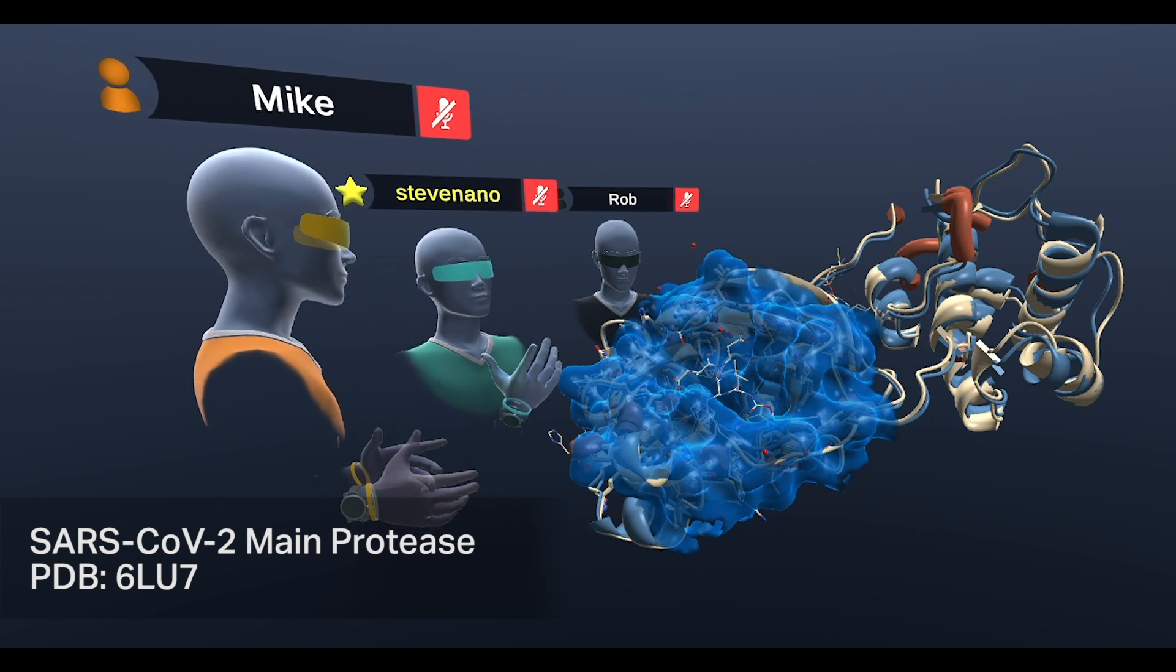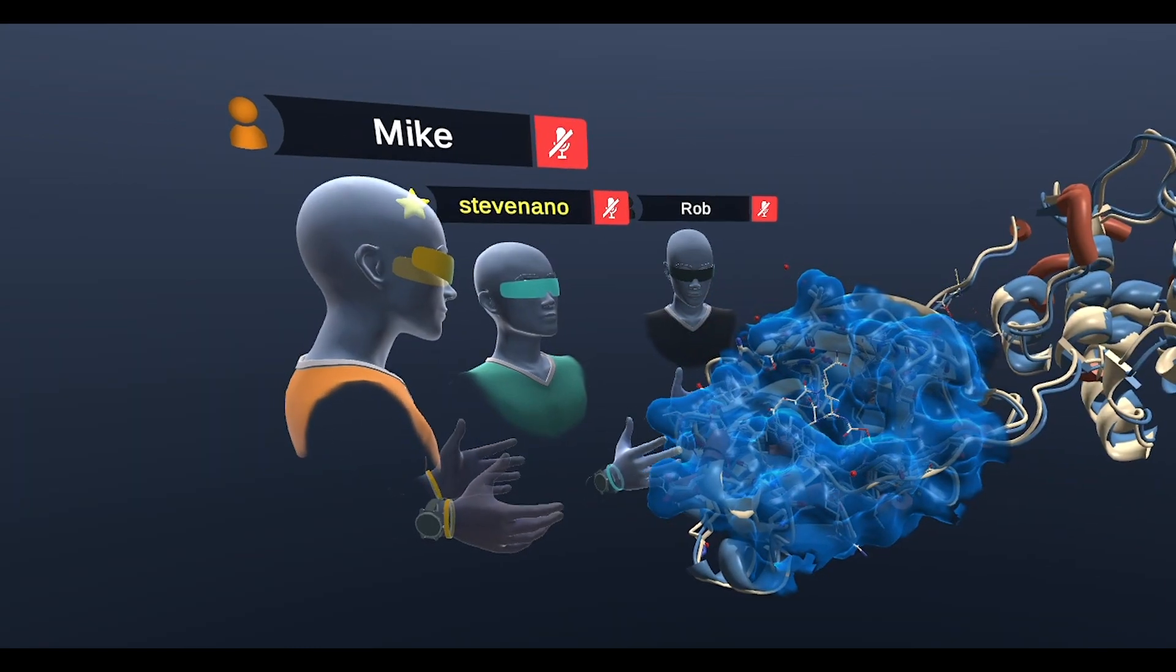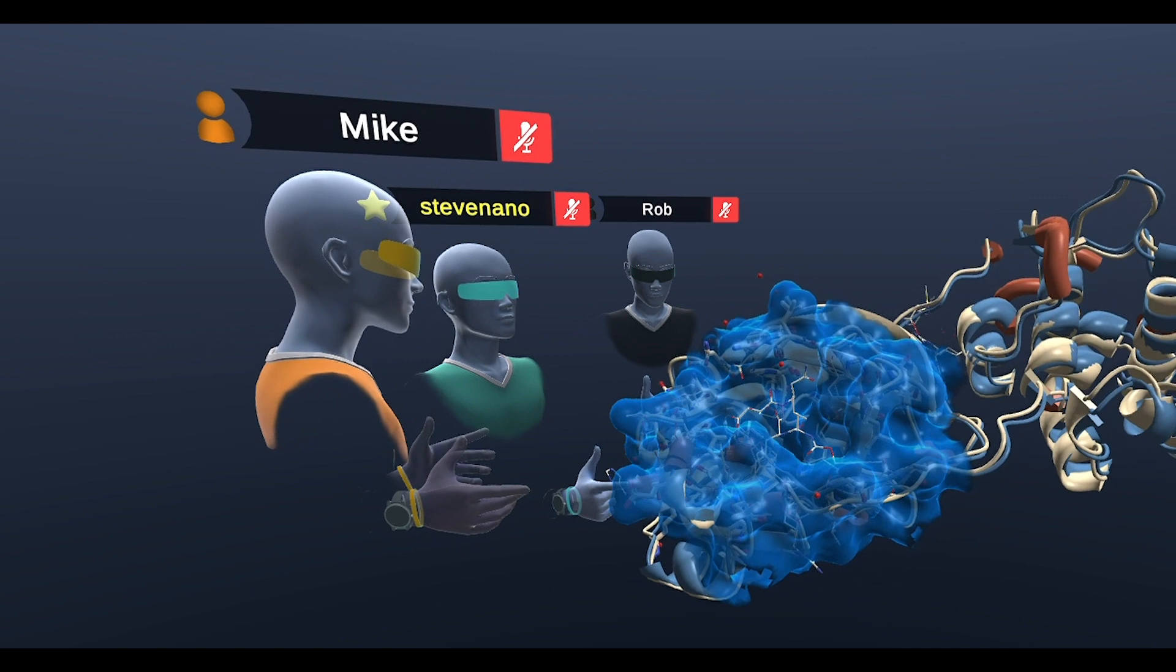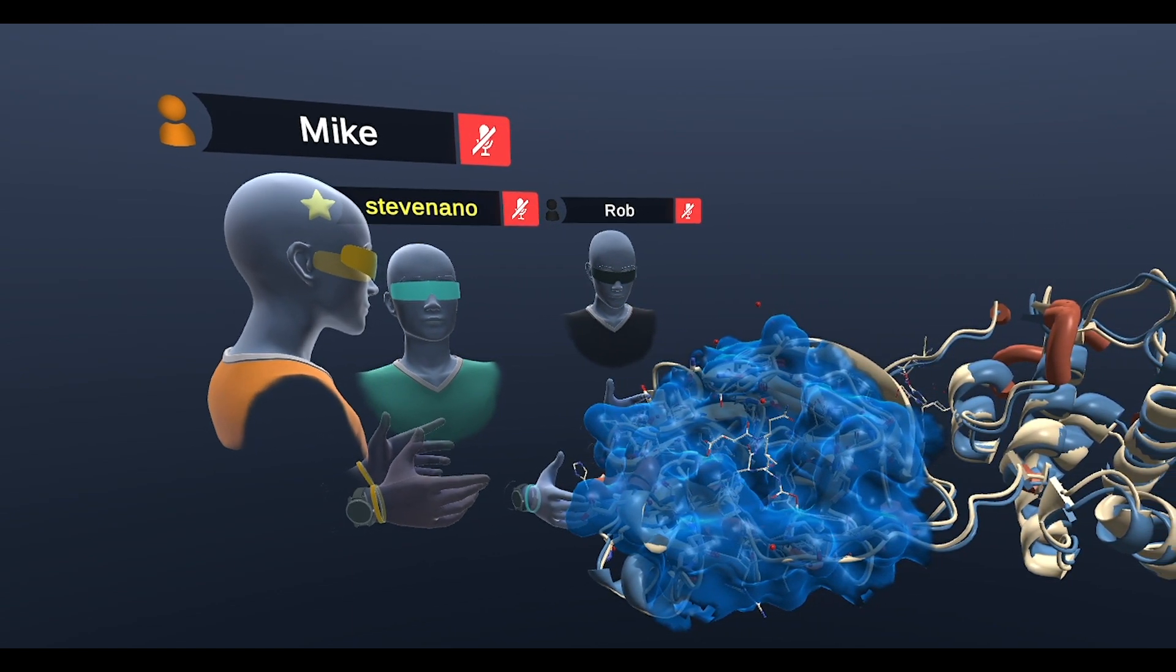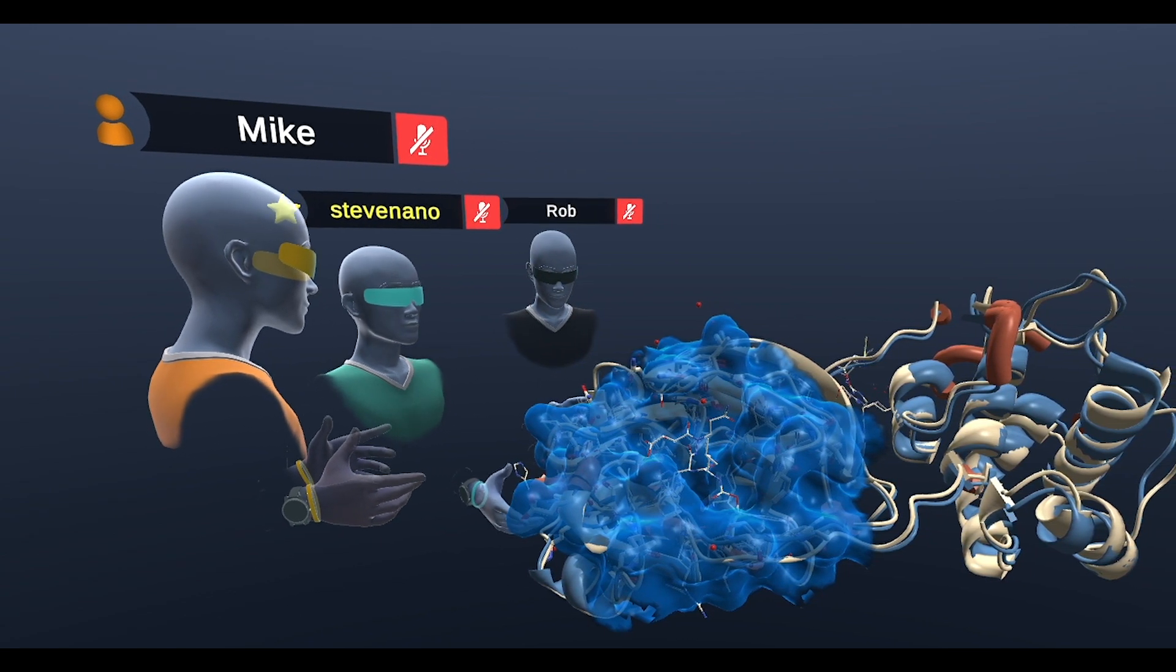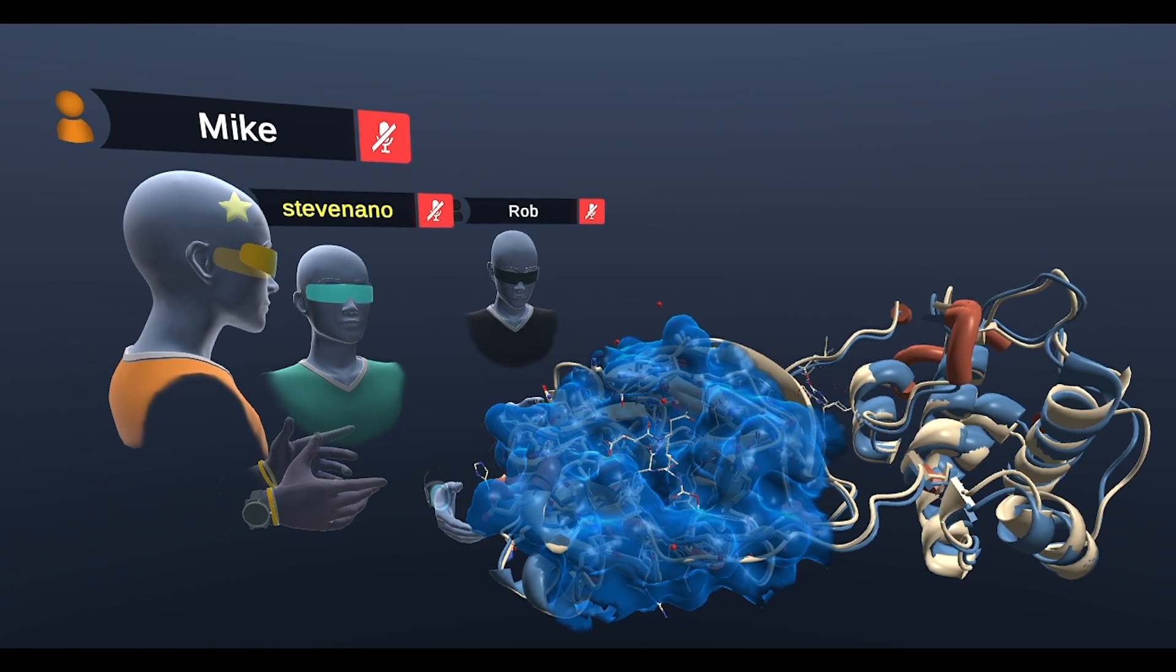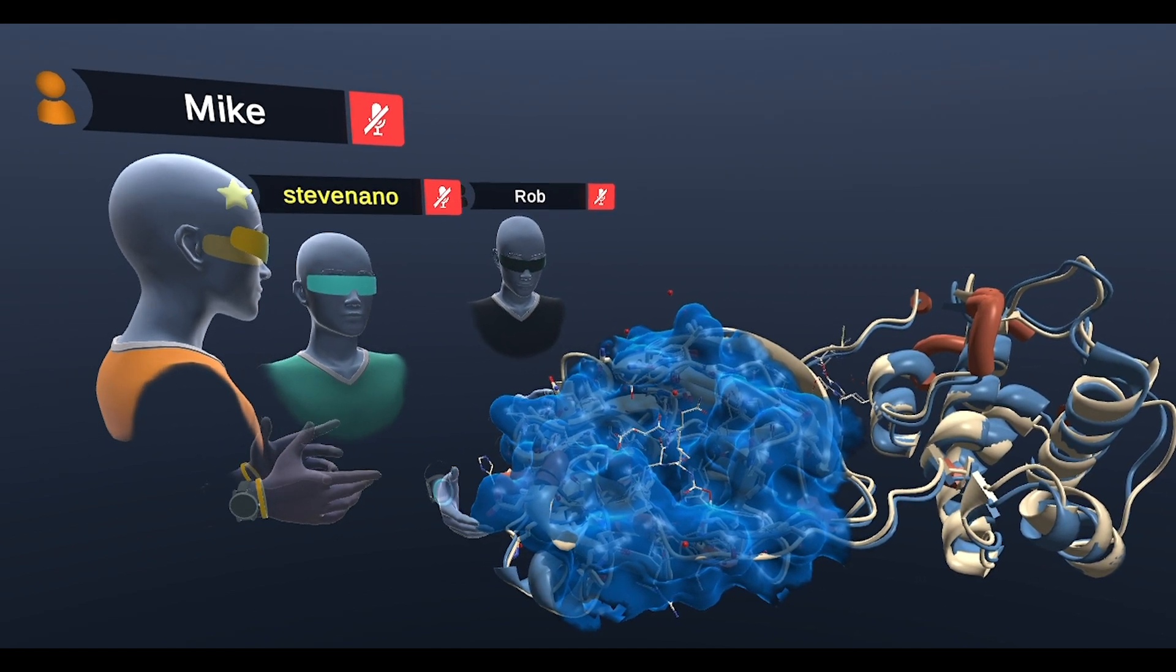Today joining us is Mike and Rob, and we're going to be exploring these structures together. This is really exciting because there are researchers across the world who work in the pharmaceutical industry, who work in biotech, who grabbed onto these proteins that are necessary for the new coronavirus to survive and replicate.